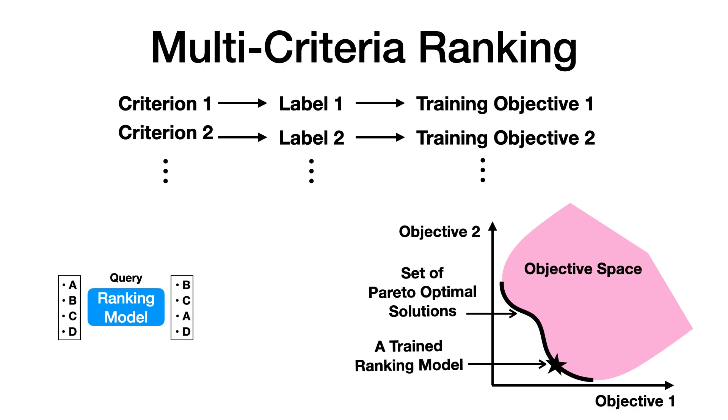Previous works on multi-criteria ranking aimed to approximate all Pareto optimal solutions instead of training for a specific one. However, this lacks practical utility. Users don't want a collection of rankings for a query. Instead, a single ranking list is shown that strikes a suitable balance among the criteria.